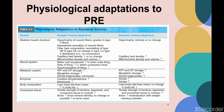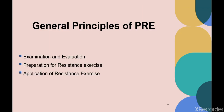With endurance training, fat-free mass may show no change, but percentage of body fat decreases. For connective tissue, strength training increases the tensile strength of tendons, ligaments, and intramuscular connective tissue, and increases bone mineral density (BMD). Endurance training also increases tensile strength of tendons and ligaments and increases mineralization, especially with weight-bearing activities.